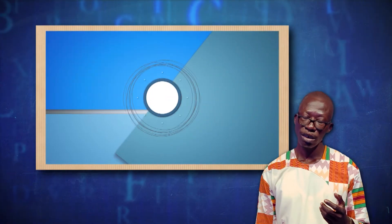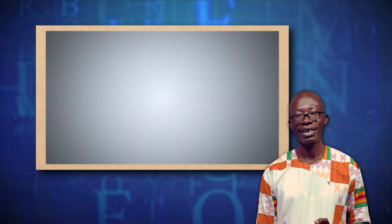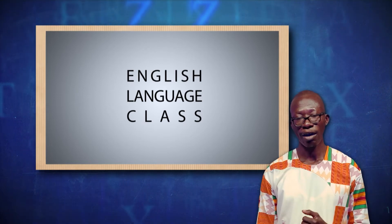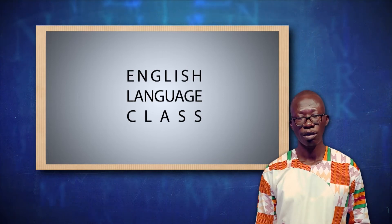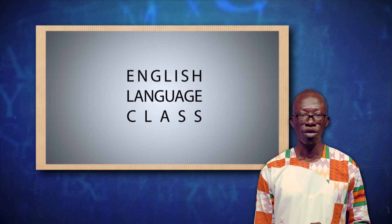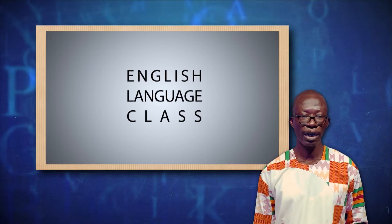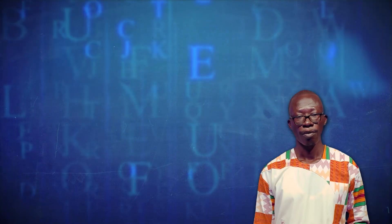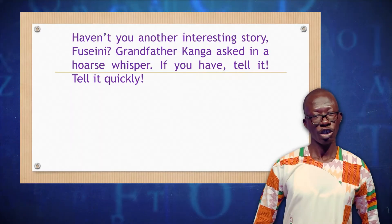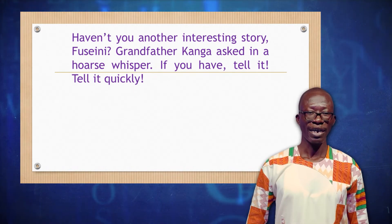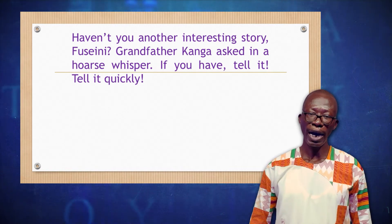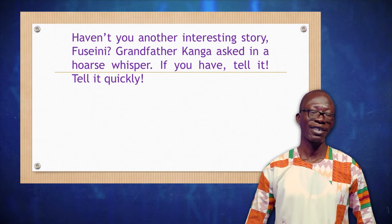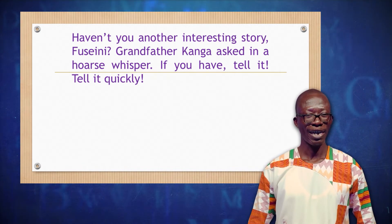Now having finished reading the passage, let's now identify the sentences first of all, and then we identify the sentences as to whether they are simple, compound, or complex. So we go to the first paragraph and try to identify the sentences. The first paragraph: Haven't you another interesting story, Fuseni? Grandfather Kanga asked in a hushed whisper. If you have, tell it. Tell it quickly. By the definition of what a sentence is, identify the sentences in this paragraph.